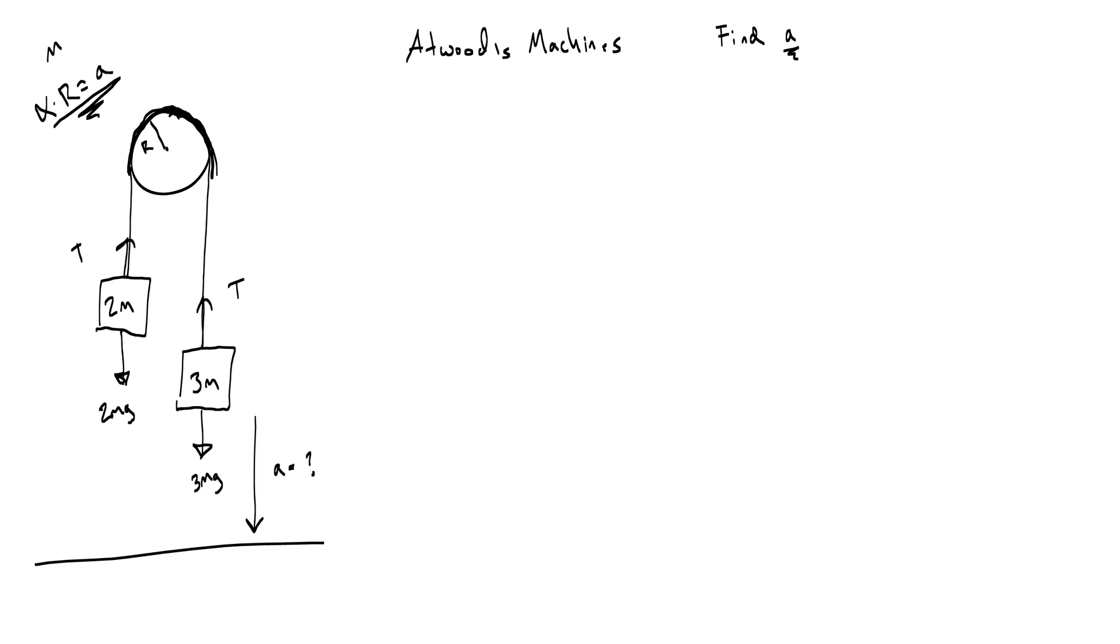Now normally, if the pulley has no mass, and this is just a good old Atwood's machine problem, you can just go ahead and say that the tension is the same on either side of the pulley. However, because the pulley has mass, that means that it's going to affect the acceleration of the system.